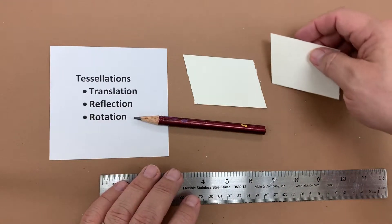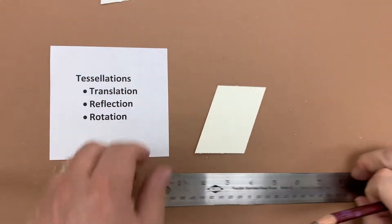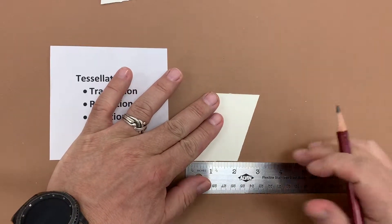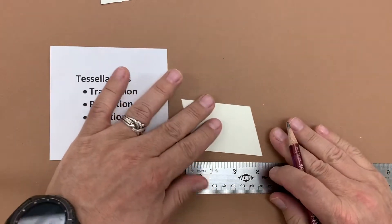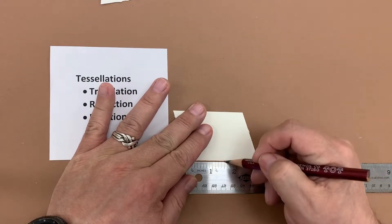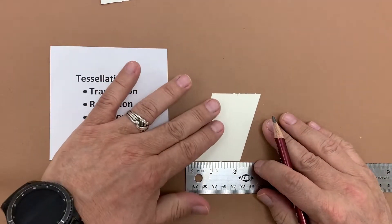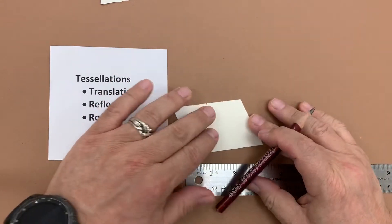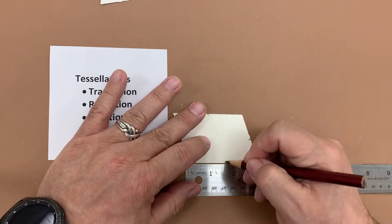First thing we need to do is find the center of each of the sides of our parallelogram. So I cut this to be two by three inches or close enough to it. I use my ruler, measure up, so if it's two inches long, one is halfway. Three inches long, one and a half. Two inches long should be one. And three inches long again, one and a half.